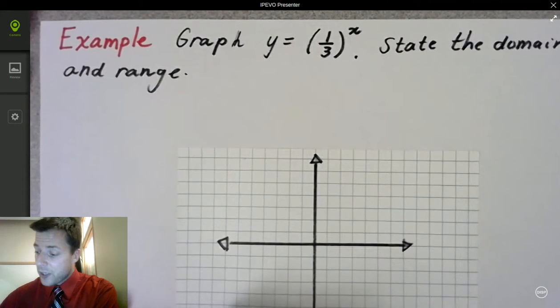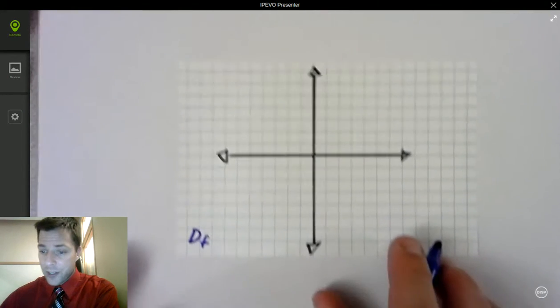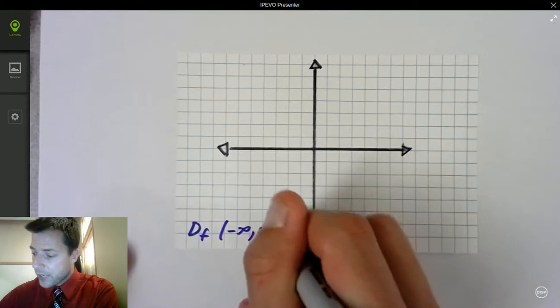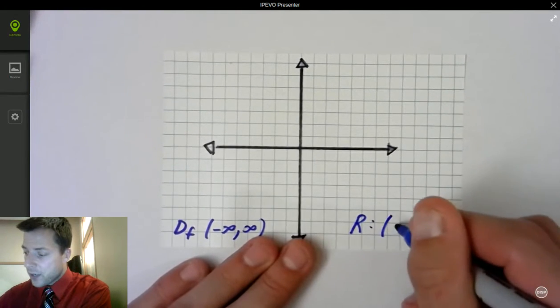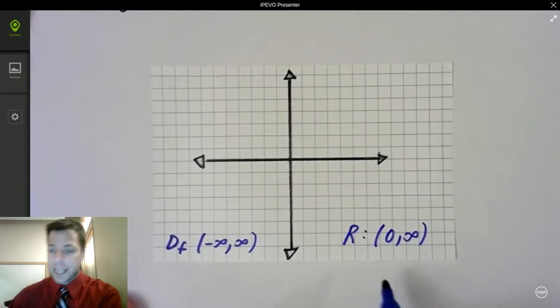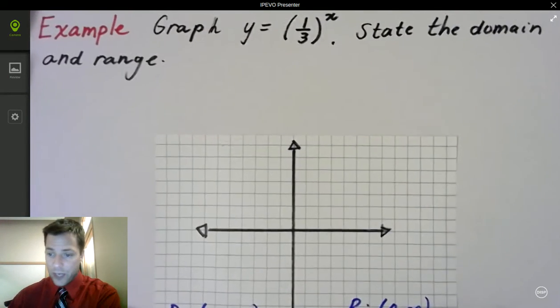The domain, if I wanted to draw the domain here of my function, is it all real numbers? And the range here is from 0 to infinity. And it's not including 0 because it's an asymptote. So when I graph this function...